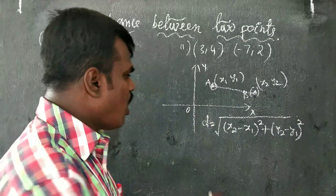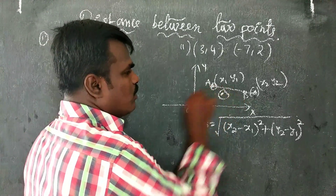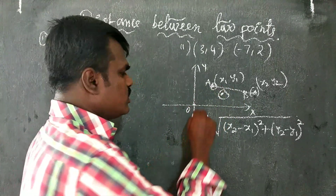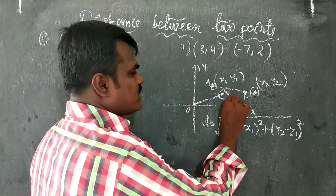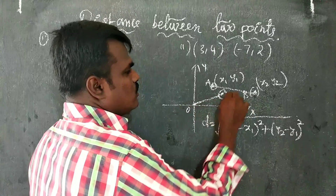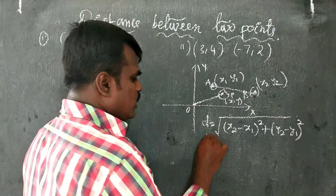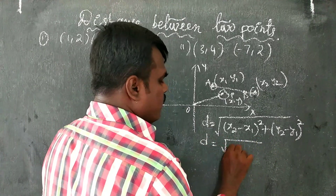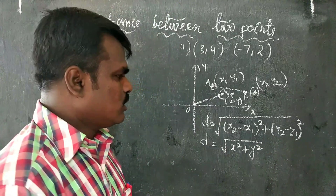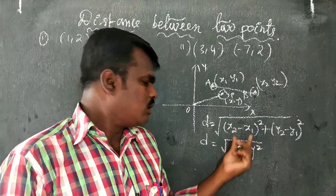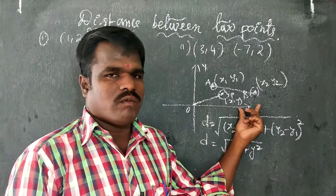Now, suppose one point is the origin (0,0) and the other point is P(x, y). Then the distance d = √(x² + y²). This is the distance from the origin to any one point.